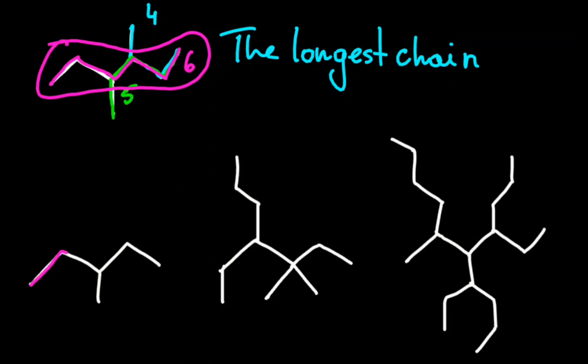So in the first one the longest chain is made from five carbons. In the second compound from seven carbons, and in the third compound from ten carbons.